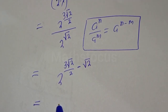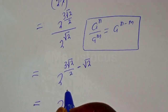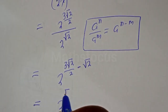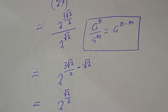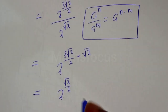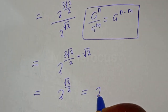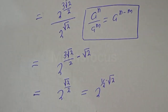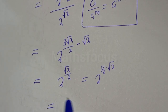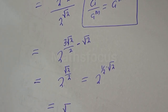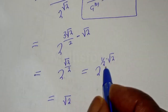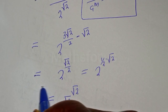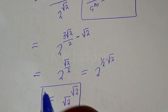This is equal to 2 raised to power root 2 over 2, which is equal to 2 raised to power 1 over 2 multiplied by root 2. This is equal to square root of 2 to the power of square root of 2, and this is the final answer.